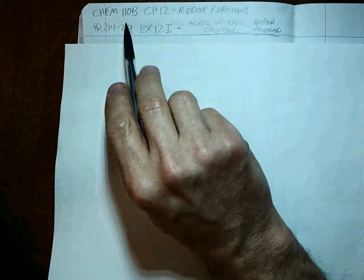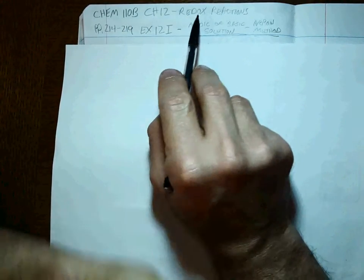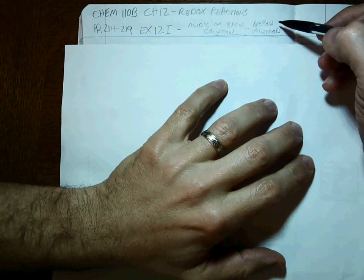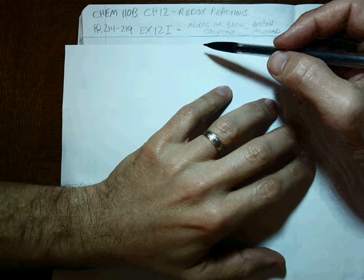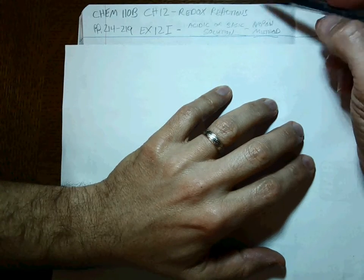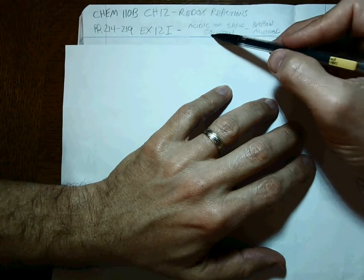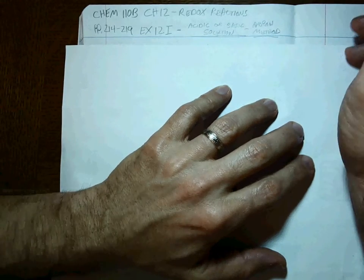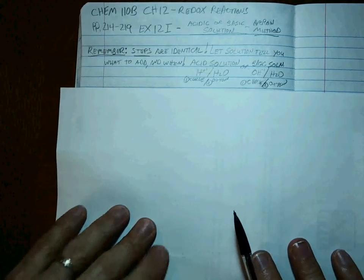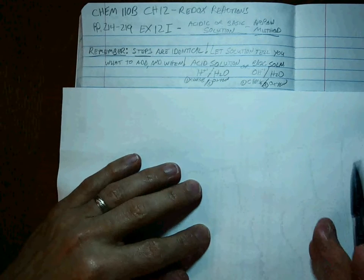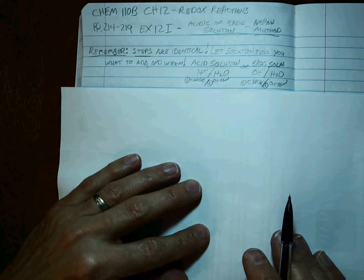All right race fans, hot rodders, we're still in K1-10b, still chapter 12, still doing redox reactions. We're going to use the arrow method, but this time for exercise 12i, instead of showing you where the waters and where the H pluses, or where the waters and the OH minuses go, it's just going to say acidic solution or basic solution.